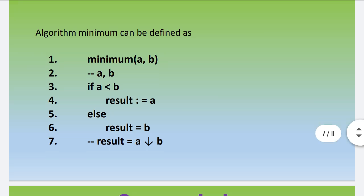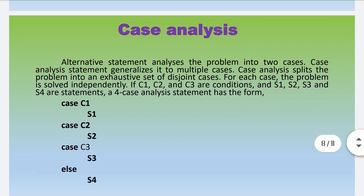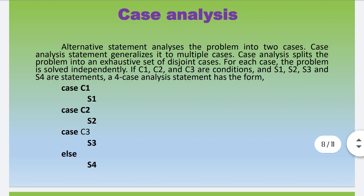Next, we are going to see about case analysis. The alternative statement analyzes the problem into two cases. A case analysis statement is generalized into multiple cases. In an alternative statement we only check one true or false case, but in case analysis we have multiple cases — more than two. Case analysis splits the problem into an exhaustive set of disjoint cases. For each case, the problem is solved independently.